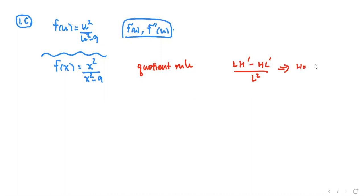And what is your low and your high? Your high first. The high is x squared, u squared. If you want to keep the u, that's fine. So the high is u squared and the low is u squared minus nine. So the d-high is two u. And the d-low is two u.